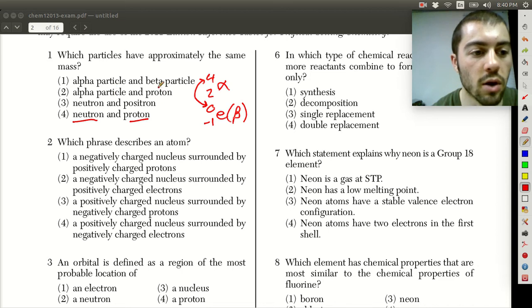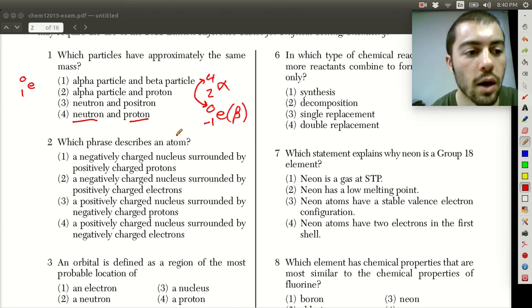Alpha particles and proton again four for the alpha and one for the proton, neutrons and positrons. So positrons remember we said were basically the positive versions of electrons, we could label it as zero one E, so those obviously aren't going to have the same mass either. So a neutron and proton both have a mass unit of one and that's how you would come up with answer choice four here for number one.